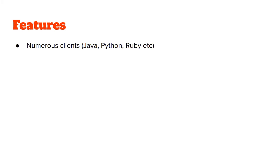Let's look at some of the features of Apache Kafka. Kafka has numerous clients — you can write Apache Kafka code in Java, Python, Ruby, and so on. Kafka has a pull mechanism as opposed to a push mechanism. In a push mechanism, the producer continuously sends data to the consumer, and if the consumer is not fast enough to consume all the volume of data, it may end up dropping certain data points. In a pull mechanism, however, the consumers request data from the producers themselves, so in Kafka, consumers request data when they are ready to process it.